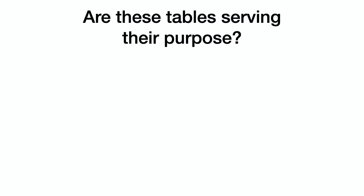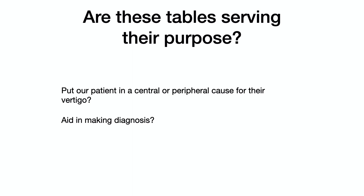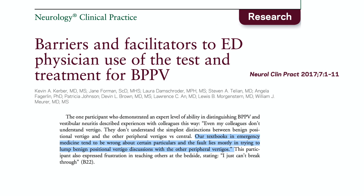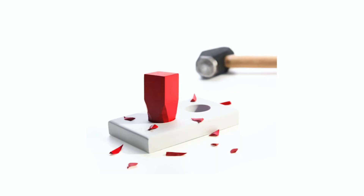So what's the final verdict on whether these tables are useful to help you assess the undifferentiated vertigo patient? The answer is no on all counts. In a study by Kerber, where they interviewed emergency physicians about their experiences with BPPV, one physician described at an expert level of ability complained that the errors in emergency medicine textbooks lie mostly in trying to lump BPPV with other peripheral vertigo disorders. Well, exactly — trying to show how similar BPPV is to vestibular neuritis is like trying to put a square peg in a round hole.